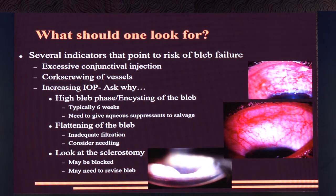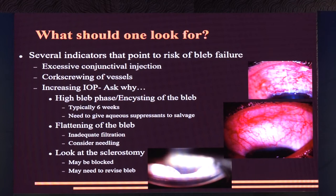Several indicators point to risk of bleb failure: excessive conjunctival injection, corkscrewing of vessels (which indicates underlying fibrosis), and increasing IOP. Ask yourself: is it a high bleb phase? Is the bleb becoming encisted — typically at six weeks? If so, give an aqueous suppressant. If the bleb is flattening, it's inadequate filtration — consider needling as it's fibrosing and needs opening up. Always do gonioscopy and check the sclerostomy; sometimes it's simply an iris plugging it, needing only a Sinski hook in the OR plus 5-FU.